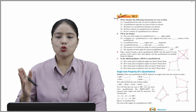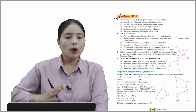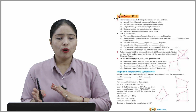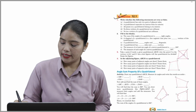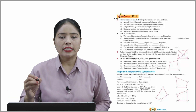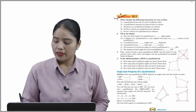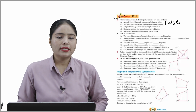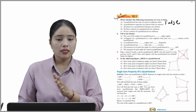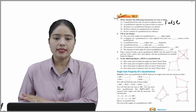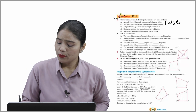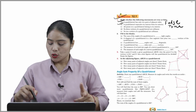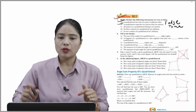Now Exercise 12.1 — write whether the following statements are true or false. First: a quadrilateral has only two pairs of adjacent sides — this is false, because a quadrilateral actually has four pairs of adjacent sides. Second: a quadrilateral separates its interior from its exterior — this is true. The remaining parts of the exercise you have to complete on your own.